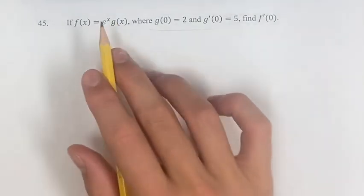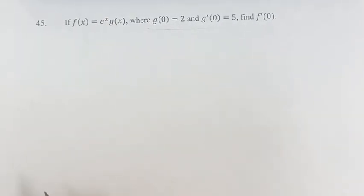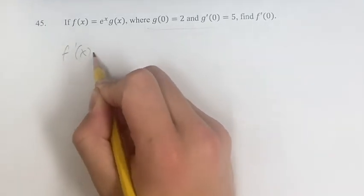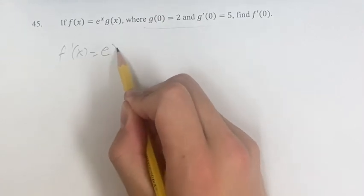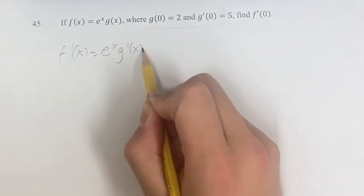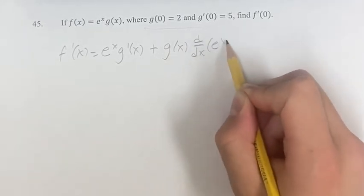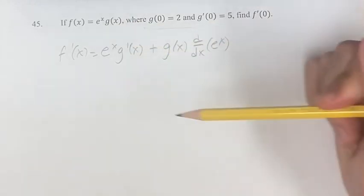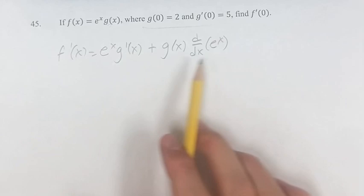Let's just calculate the general form of the derivative of f. We're going to do that using the product rule, since we have e to the x times g of x. The derivative is going to be the first term times the derivative of the second term, plus the second term times the derivative of the first term. So we have e to the x times the derivative of g of x plus g of x times the derivative of e to the x. This is just the product rule.